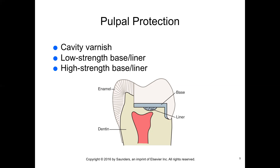Many preps are not as aggressively made today. Before, if you had just an occlusal filling, they would take out the entire occlusal instead of just the area where decay was. Calcium hydroxide is used as a low-strength base or liner in cavity preparations in which dentin no longer covers the pulp. It stimulates reparative dentin formation and has an alkaline pH between 9 and 11.